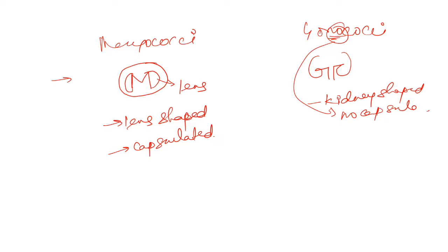Gonococci has no capsule — 'kono' means no capsule. Meningococci, on the other hand, draw a circle around the M, so meningococci is capsulated. Meningococci has both M and G in its name, so meningococci ferments both maltose and glucose.